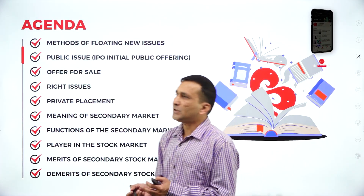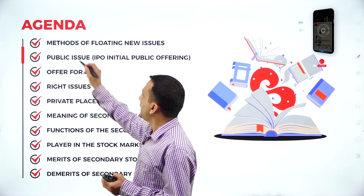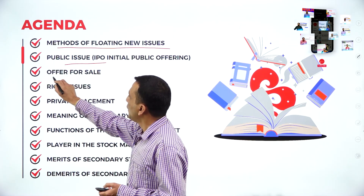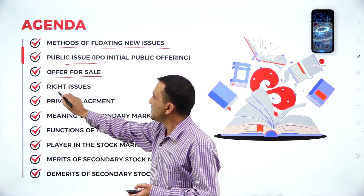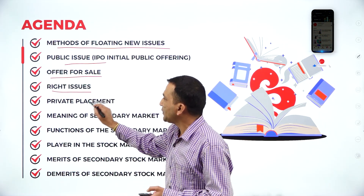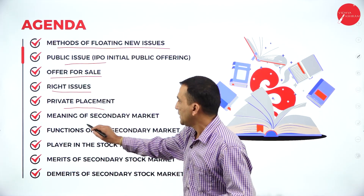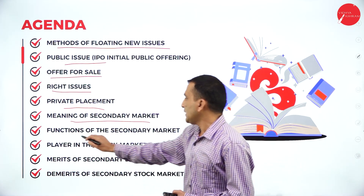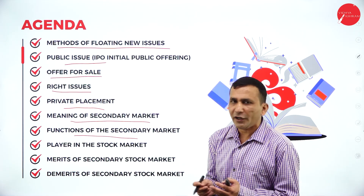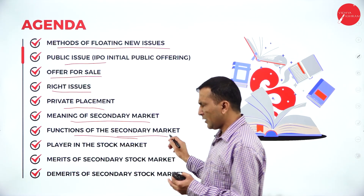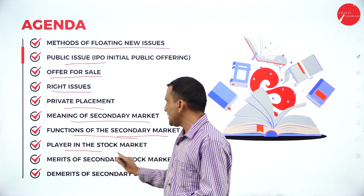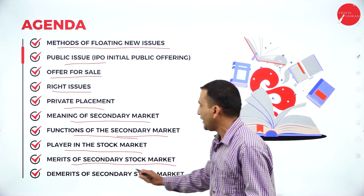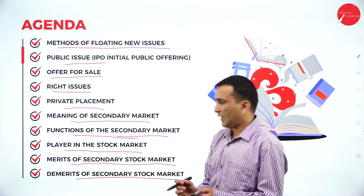Today my agenda: you will get more clarity about the method of floating new issues — public issue and offer for sales, rights issue, private placement — and the meaning and functions of secondary market, the important functions carried out in the secondary market, the players in the stock market, and the merits and demerits of secondary market.